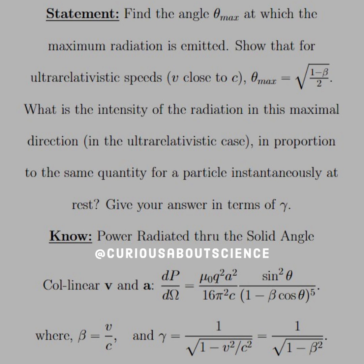So our question is, find the angle theta max at which the maximum radiation is emitted. Show that for the ultra-relativistic speeds, V close to C, theta max equals square root of 1 minus beta over 2. What is the intensity of the radiation in this maximal direction, in the ultra-relativistic case, in proportion to the same quantity for a particle instantaneously at rest?